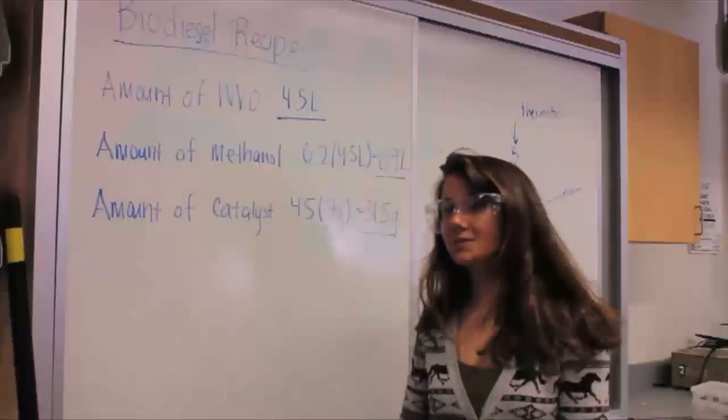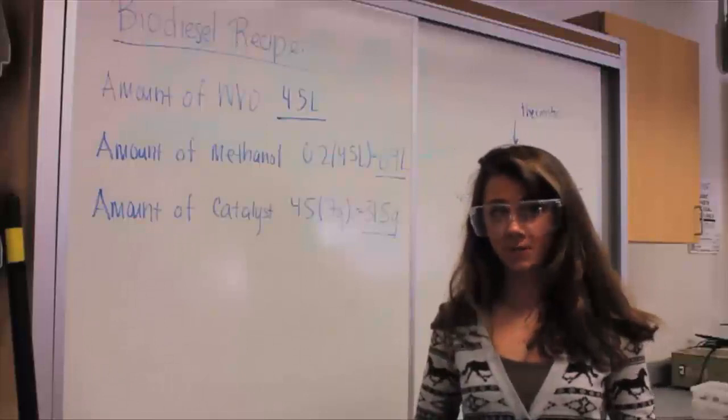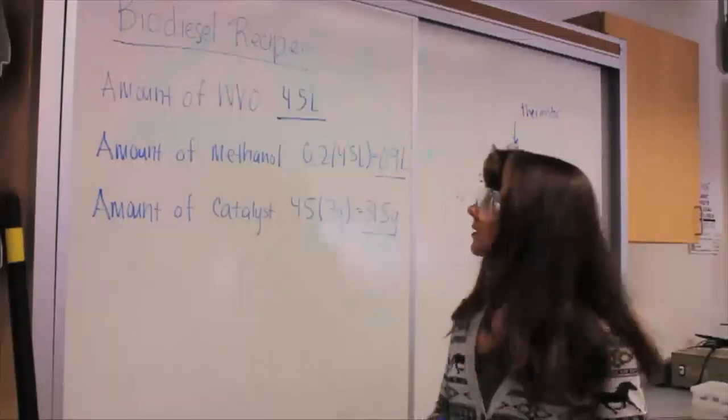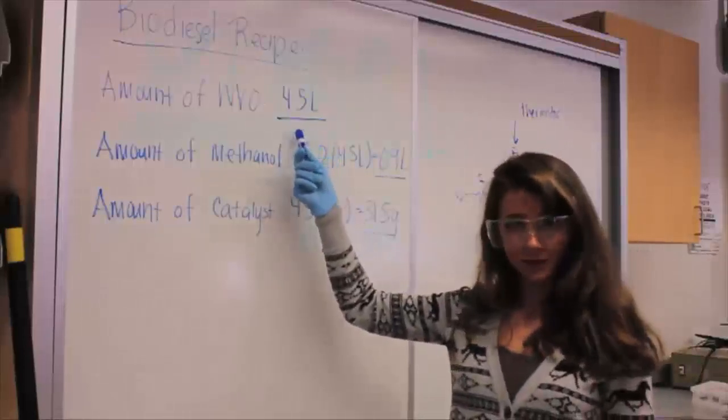Let's take a look in the lab. Hi, so I'm going to show you a general process of how we make biodiesel. In order to make biodiesel, you need waste vegetable oil. So today we're using 4.5 liters of waste vegetable oil.